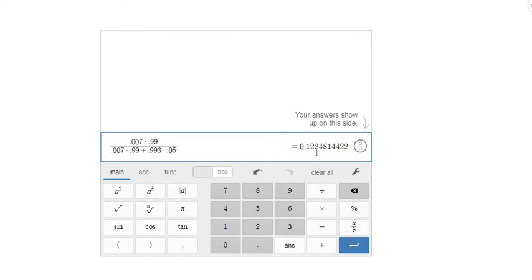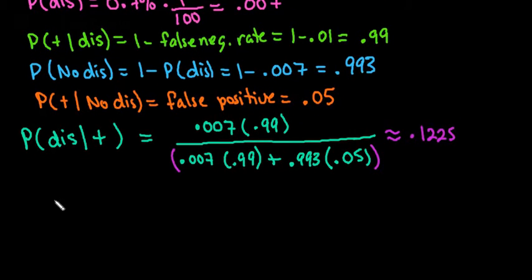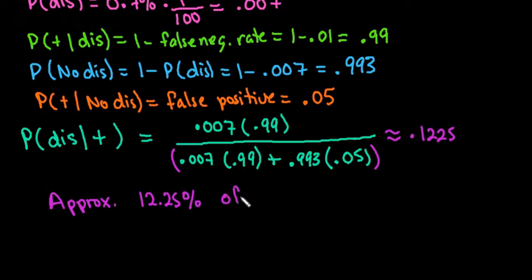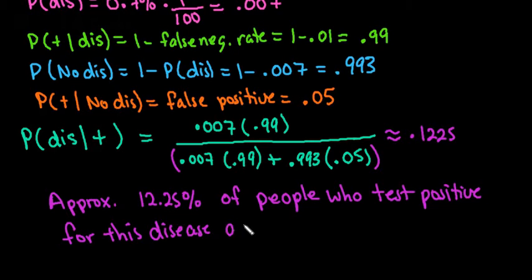The answer is 0.12248, so rounding to four decimal places, this is approximately 0.1225. We can say that approximately 12.25% of people who test positive for this disease actually have it.